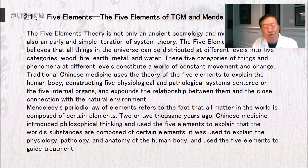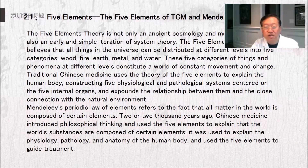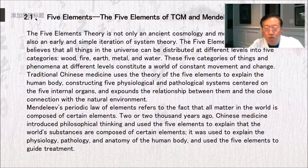The five element theory is not only an ancient cosmology and methodology, but also an early and simple iteration of systems theory. It believes that all things in the universe can be distributed into five categories of wood, fire, earth, metal, and water, constituting a world of constant movement and change. Traditional Chinese medicine uses the theory of the five elements to explain the human body, constructing five physiological and pathological systems centered on the five internal organs. Two or three thousand years ago, Chinese medicine used the five elements to explain the world's substances and to explain the physiology, pathology, and anatomy of the human body, and used the five elements to guide treatment.